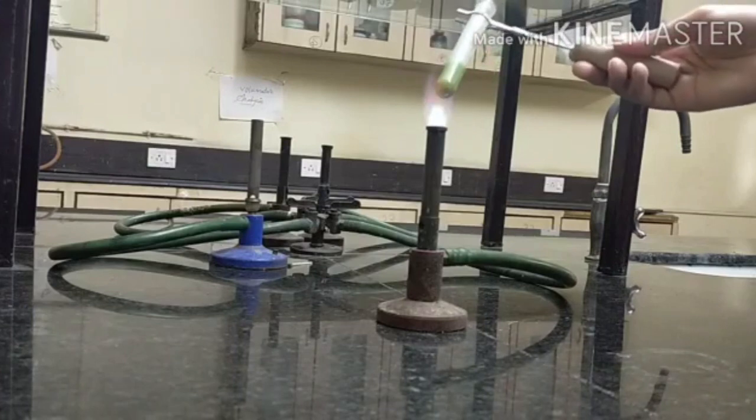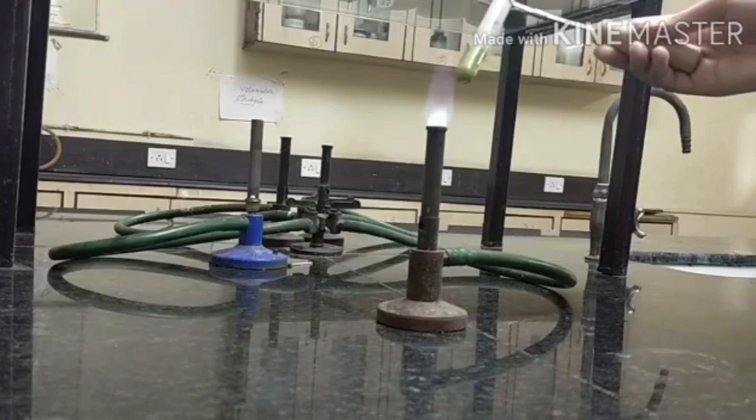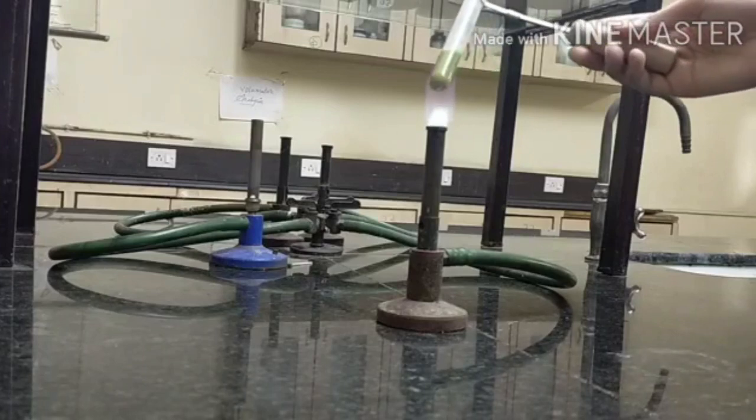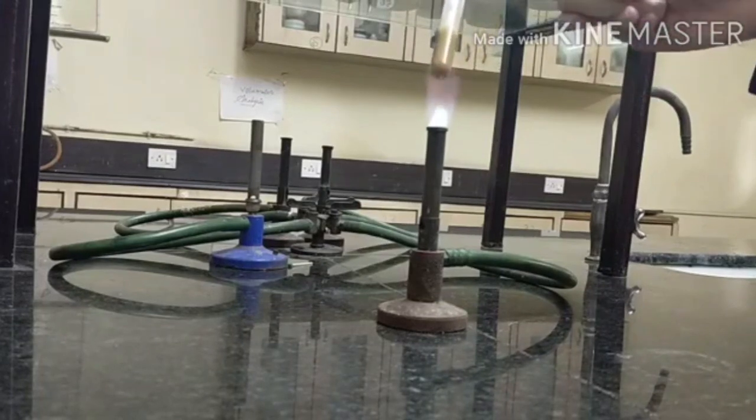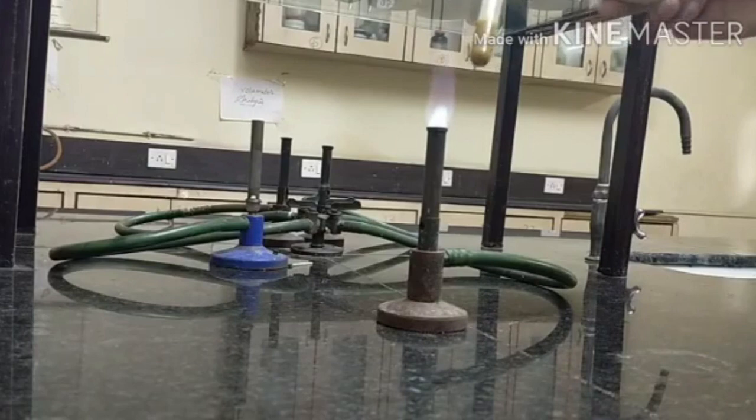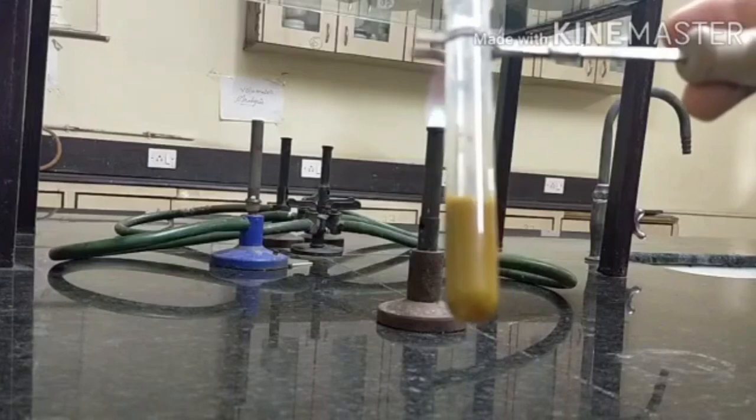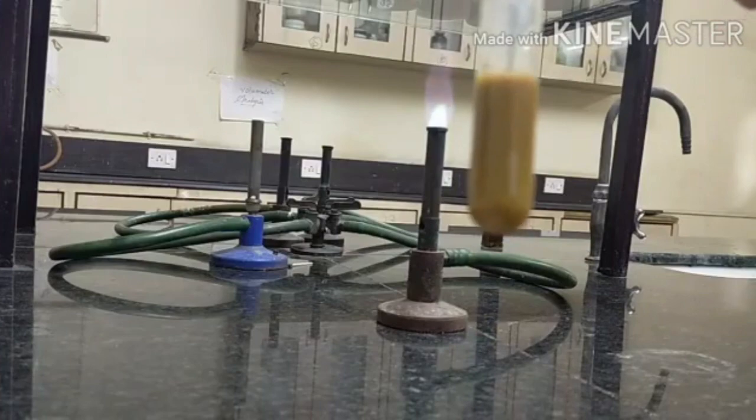We will see the changes, meaning the blue color changes its color. If it changes its color, it indicates that the unknown sample contains carbohydrate. See, the color is reddish brown. It indicates that the unknown sample contains carbohydrate.